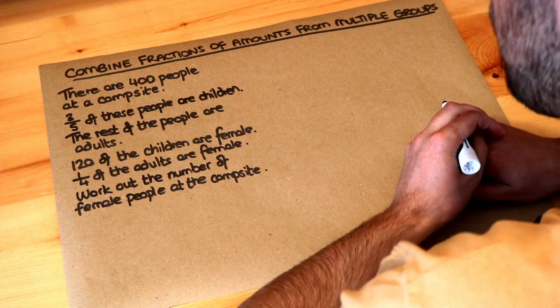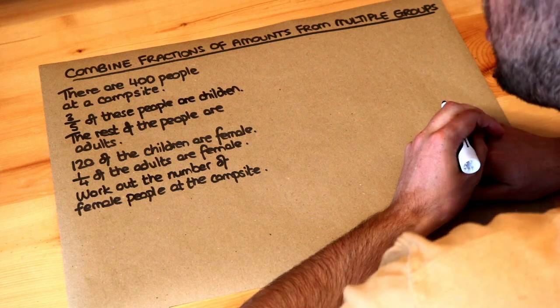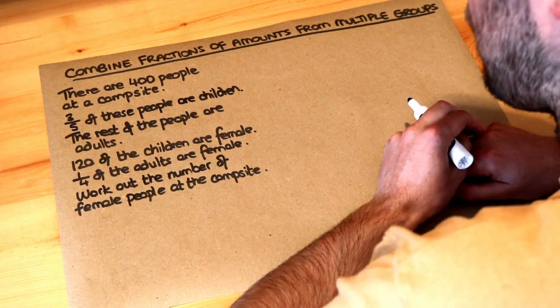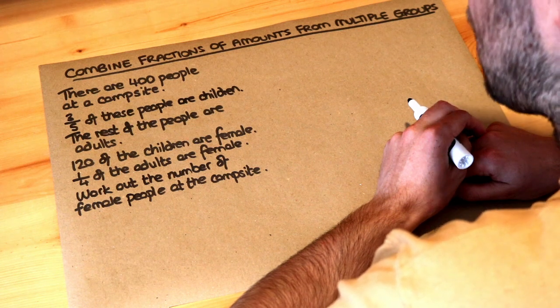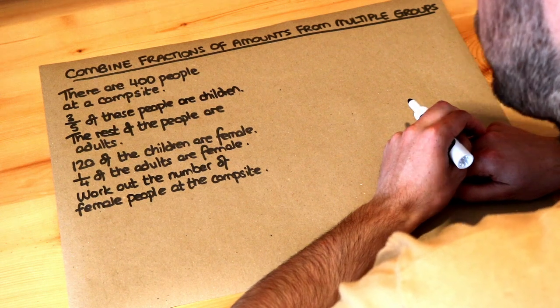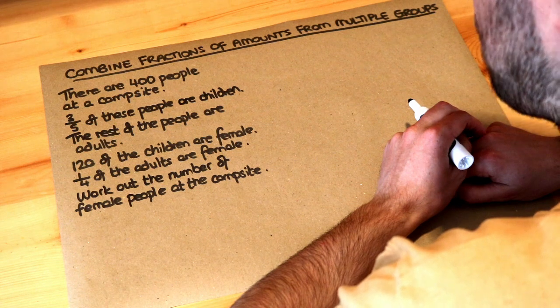Hello and welcome to this Dr. Ross video on combining fractions of amounts from multiple groups. Let's read the question. There are 400 people at a campsite. Three-fifths of these people are children, the rest of the people are adults. 120 of the children are female, a quarter of the adults are female. Work out the number of female people at the campsite.